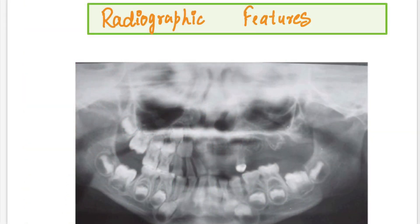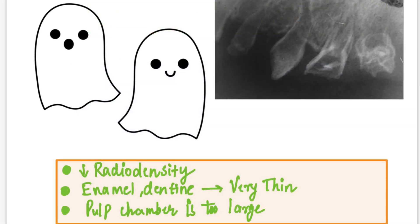Moving on to the radiographic features: as both enamel and dentine are affected, there is a marked reduction in radio density. Normally in an IOPA the hard tissues look radiopaque, but in this case they appear radiolucent. In this OPG we can clearly visualize that there is a marked reduction in radio density, and we can only make out a thin rim of calcified tissue — the teeth appear almost completely radiolucent. This is called the ghost teeth appearance. The enamel and dentine are both very thin, the pulp chamber is very large, and the enamel layer is not evident in most cases.